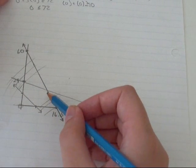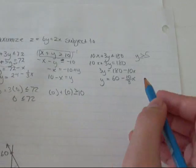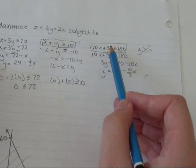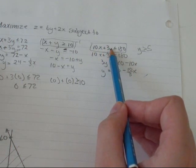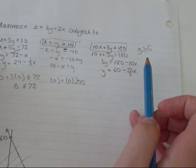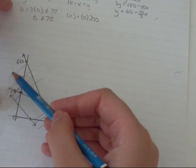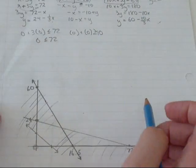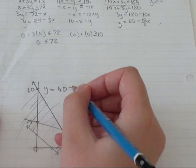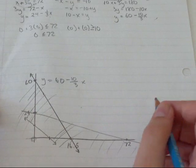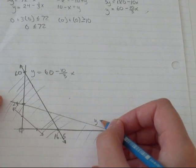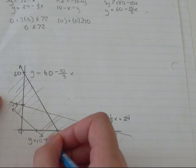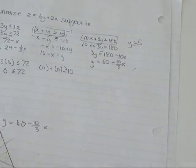Okay, so again (0, 0) isn't on this line. So I'm going to pick (0, 0) when I'm going to use this equation. So 10 times 0 plus 3 times 0, that's just 0. Is 0 less than or equal to 180? Yep, that's true. So I'm shading this side of my line. And I'm just going to label them really quick. This was y equals 60 minus 10 over 3x. And this one was y equals negative 1 third x plus 24. And this one was y equals 10 minus x.